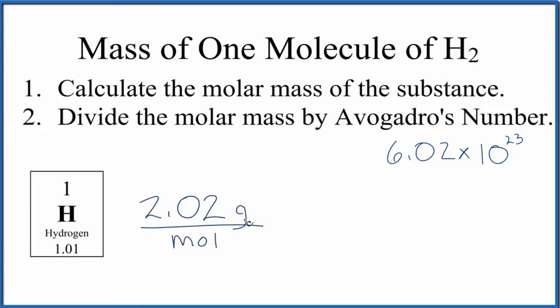So we're going to take this and multiply it by a conversion factor, because we know that one mole of any substance, that's going to have Avogadro's number of particles. And now we have moles on the bottom and the top. That cancels out. So we're just dividing 2.02 grams by Avogadro's number.